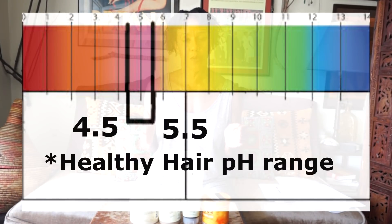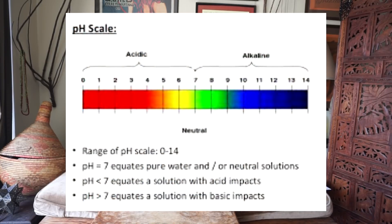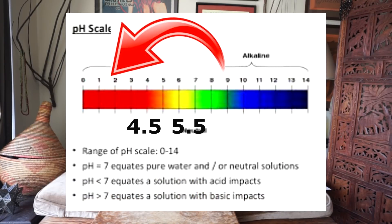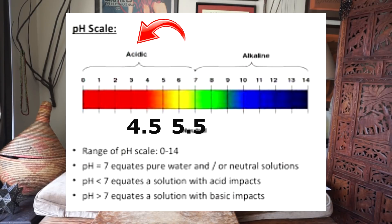When it comes to our hair, we have a healthy pH range, and that range is 4.5 to 5.5. We need hair products within that range, or no higher than a 7, to avoid damaging our hair. The full pH scale runs from 0 to 14 — the 0 side is acidic and the 14 side is alkaline. Our hair's healthy range of 4.5 to 5.5 puts it firmly on the acidic side.